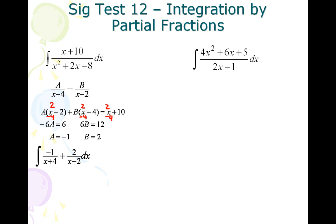So it means our integral becomes the integral of negative 1 over x plus 4 plus 2 over x minus 2. So the anti-derivative would be negative ln of x plus 4 plus 2 times ln of x minus 2 plus c.